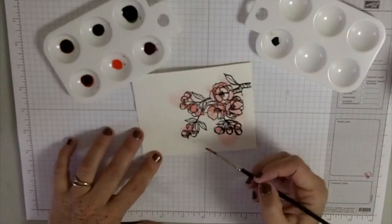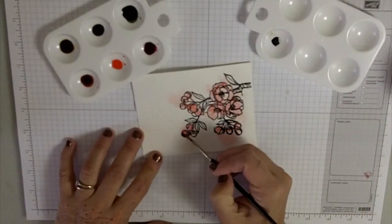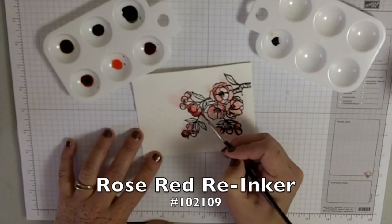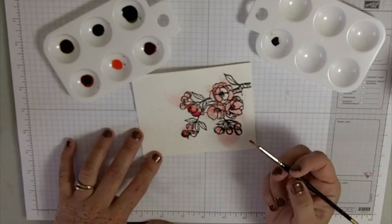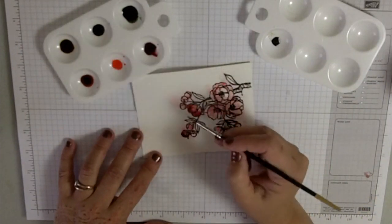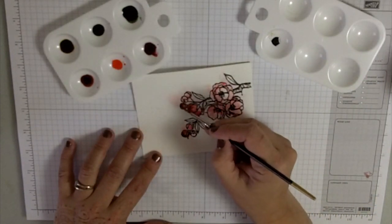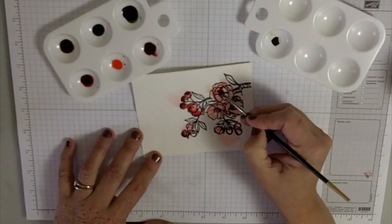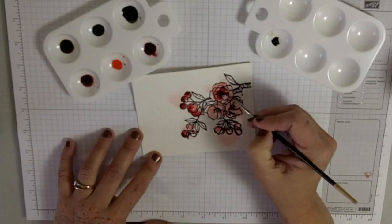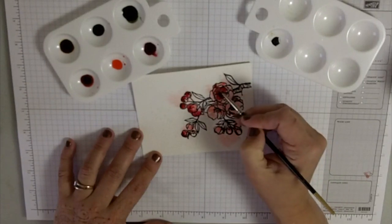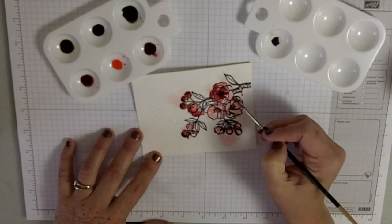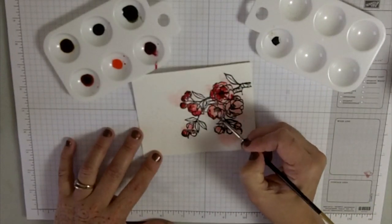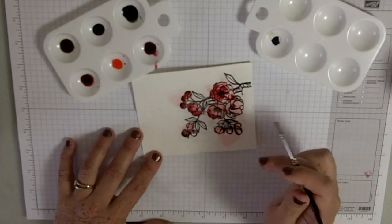Our last color for the flowers themselves is Rose Red. We're going to put that on the tips of the flowers and the buds—the cherry blossoms. You want to pop a little on the middle and put a little on the edges.